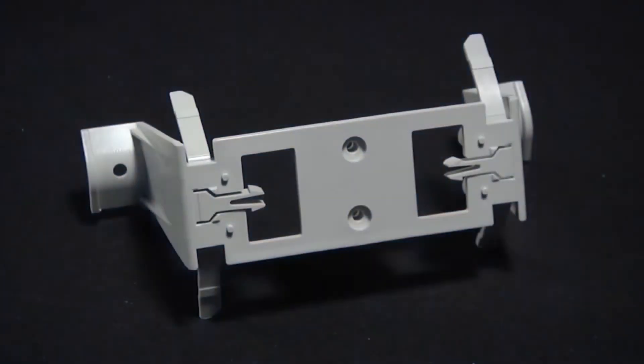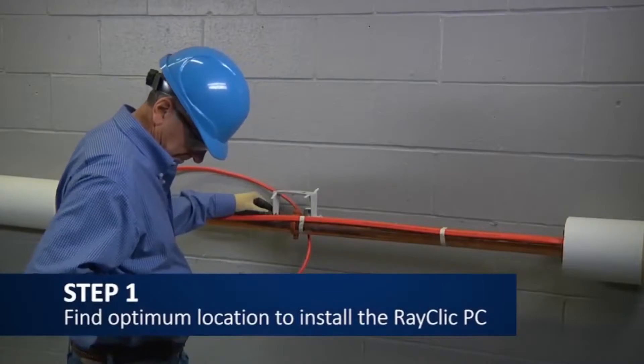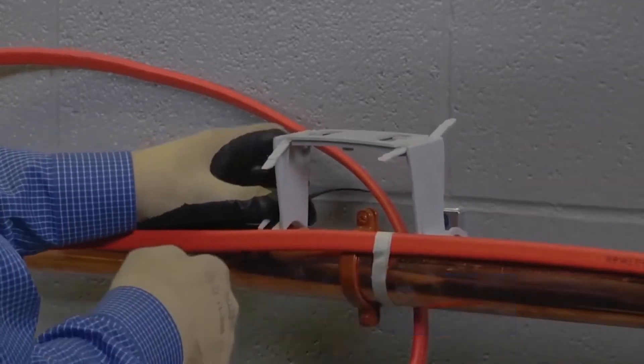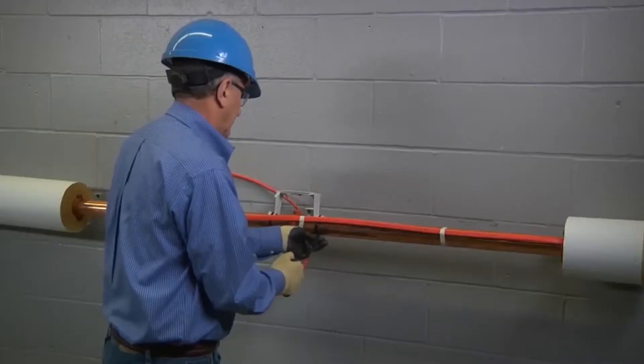For this demonstration we will be mounting the RayClick PC on a water pipe using a pipe mounting bracket. First, find the optimum location for the RayClick PC to be installed, and using the plastic cable ties, attach the pipe mounting bracket to the pipe.